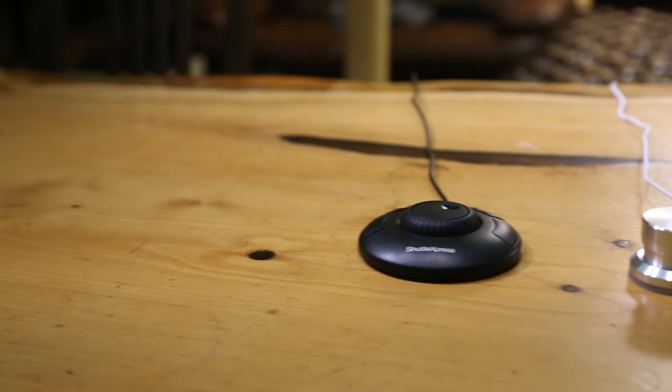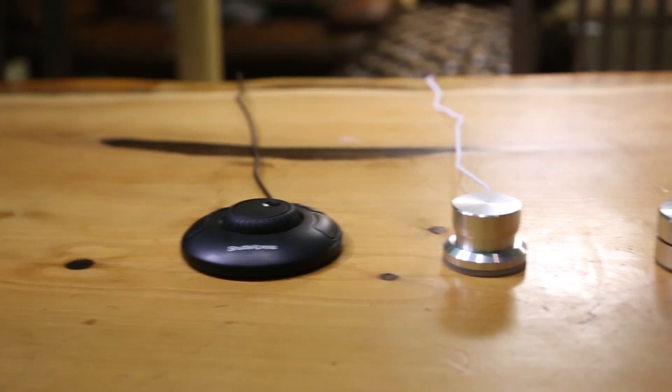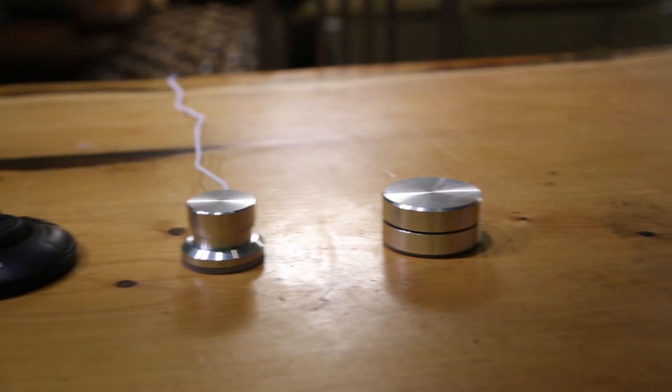Alright, today we're going to review three different video editing jog wheels. We've got the Contour Shuttle Express, the Gryphon Powermate USB, and the Gryphon Powermate Bluetooth. They all offer very different functionality, as well as performance and look. So let's see what we've got.